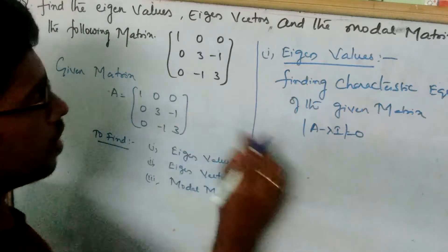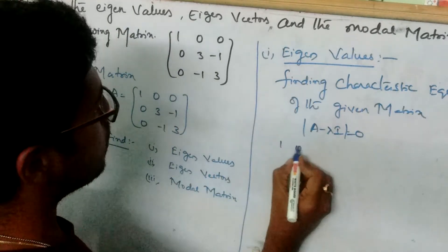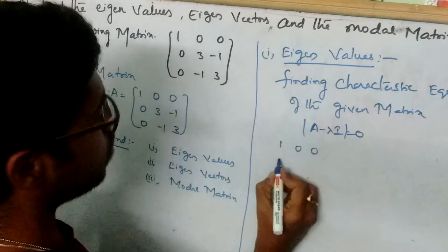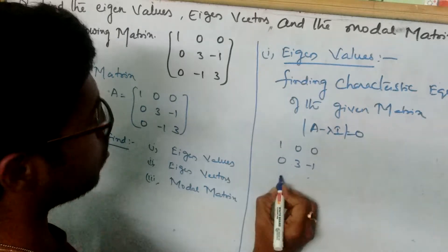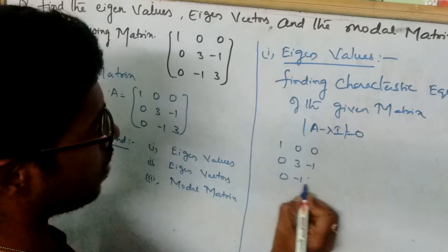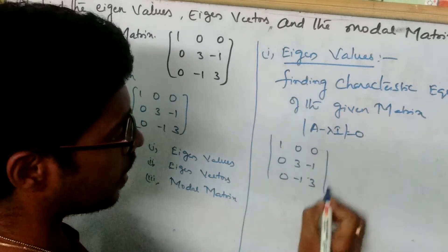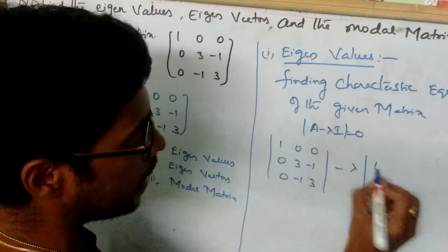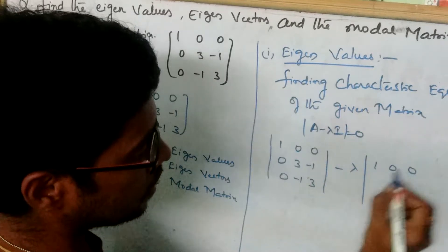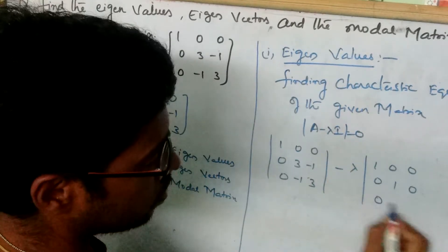The A matrix is: 1, 0, 0 — 0, 3, minus 1 — 0, minus 1, 3. We subtract lambda times the identity matrix I, which has elements 1, 0, 0 — 0, 1, 0 — 0, 0, 1.